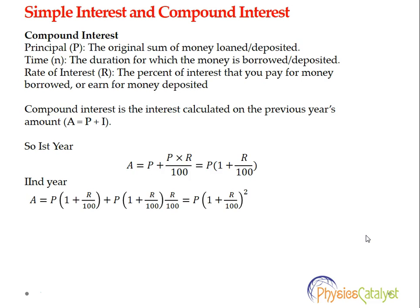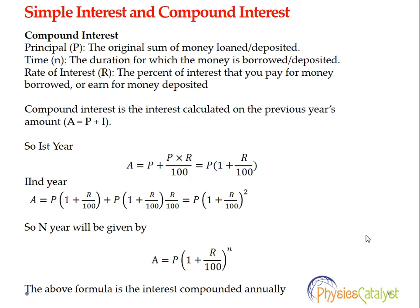For the second year, the interest is charged on the previous year's amount. The final amount for the second year is A = P(1 + R/100) + P(1 + R/100) × R/100, which simplifies to P(1 + R/100)². For N years, the amount is given by A = P(1 + R/100)^N. This is the formula for interest compounded annually.